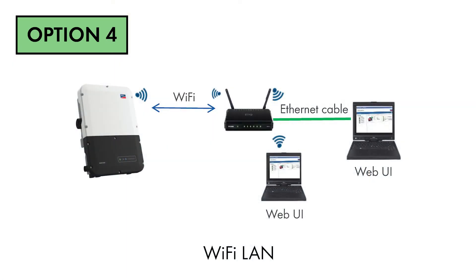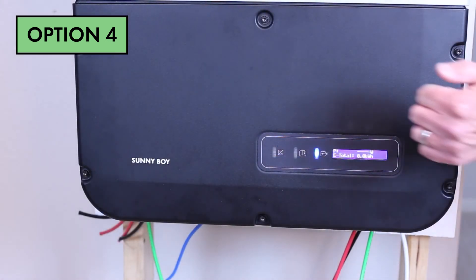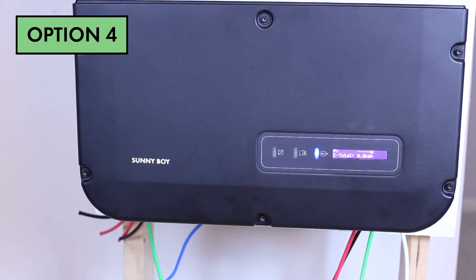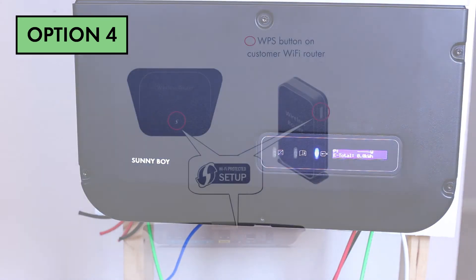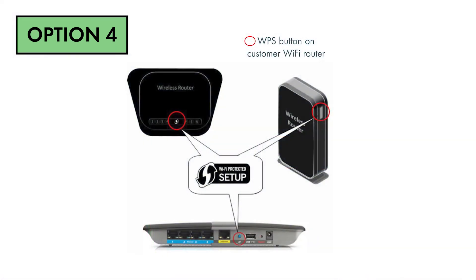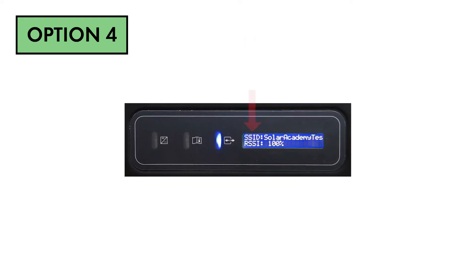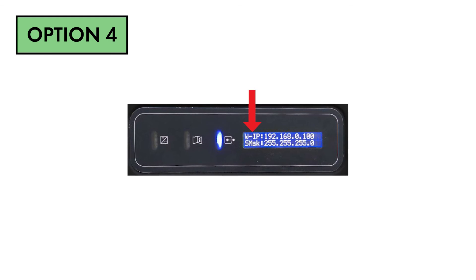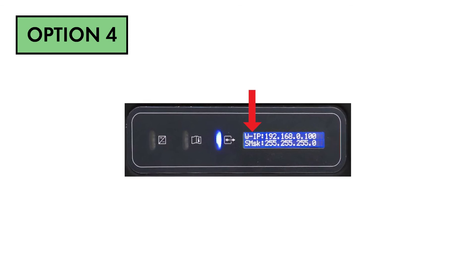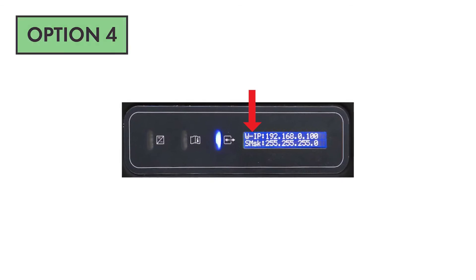For a Wi-Fi LAN connection, the inverter can be connected to the Wi-Fi network if the router supports Wi-Fi Protected Setup mode. Knock twice quickly on the Sunny Boy lid and the blue LED will begin blinking rapidly. Then activate the WPS function of the router to allow the inverter to join the network. When successful, the inverter will show the Wi-Fi network name as SSID on one of the display screens, and the W-IP shown on the following screen is the IP address to use in the browser address bar to access the user interface.